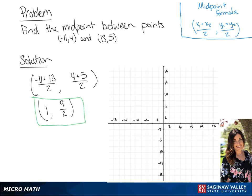So we're going to graph this using the points. Now we have our line, and we can plot our midpoint, which is 1, 9 over 2.